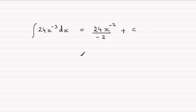Cleaning this up, 24 divided by minus 2 is going to be minus 12. So that's minus 12x to the power minus 2 plus the constant of integration, C.